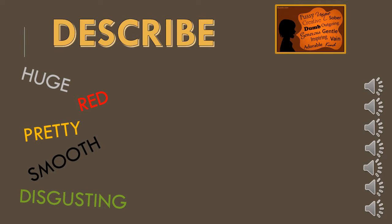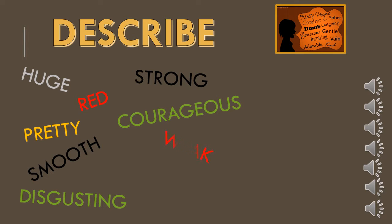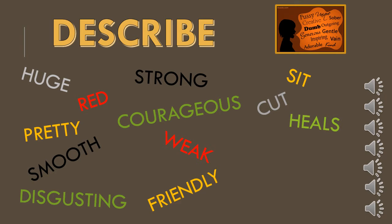You can also describe the characteristics of that object or person. For example, it is strong, courageous, weak, or friendly. You can also describe a person or an object in terms of the function or the job. For example, if you want to describe a chair, you may say it is for sitting. Scissors are meant for cutting. A doctor heals people and a builder constructs things.